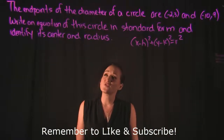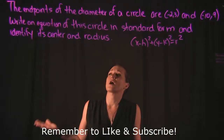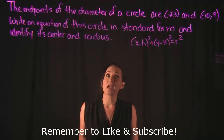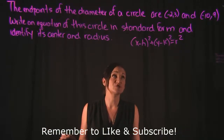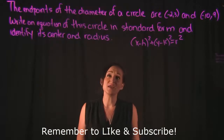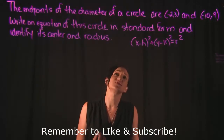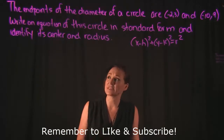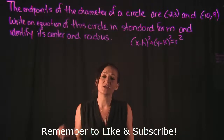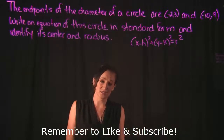For this problem, we're talking about the endpoints of the diameter of a circle: negative 2, 3 and negative 10, 9. Write an equation of this circle in standard form and identify its center and its radius.